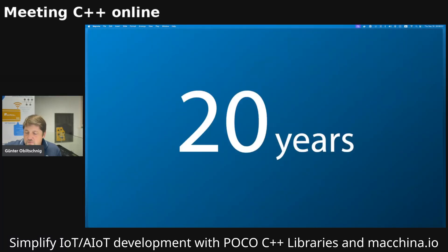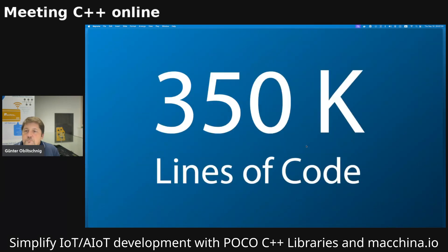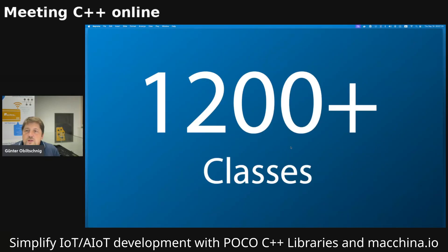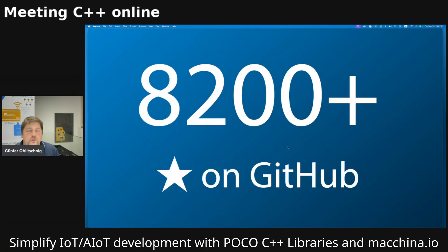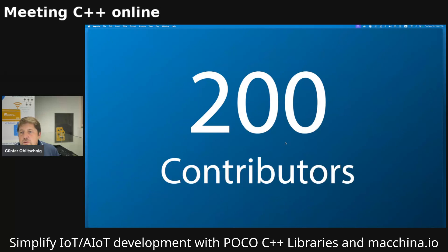The whole thing has — I cannot even believe it myself — been around for 20 years now. We have in the POCO C++ libraries around 350,000 lines of C++ code, plus a couple of thousand lines of C code from dependencies like expat, xmlbus, and some other stuff. We have 1,200 classes, and we will soon have 8,300 stars on GitHub. Over 20 years, around 200 people have contributed code to the POCO C++ libraries.